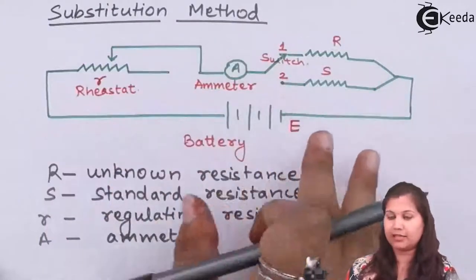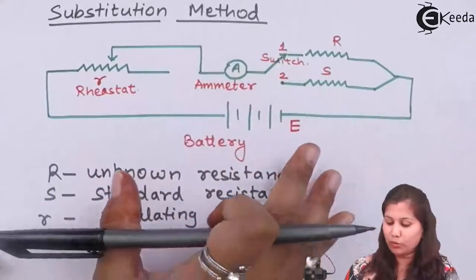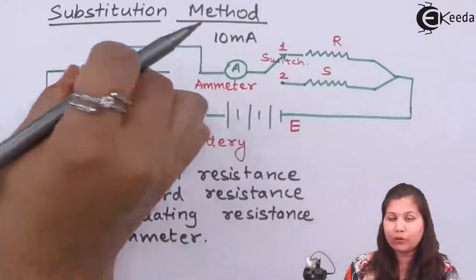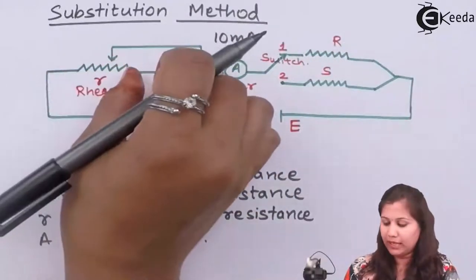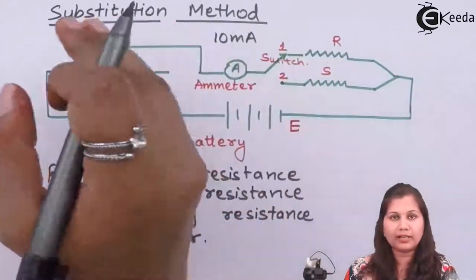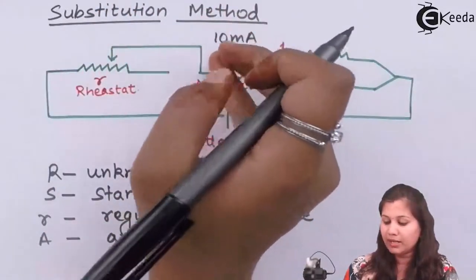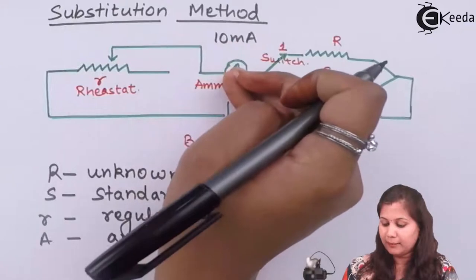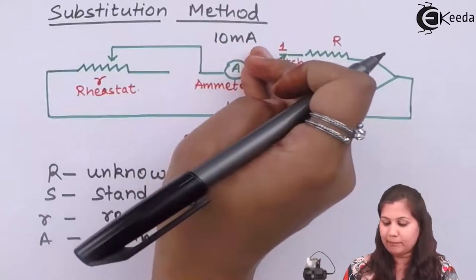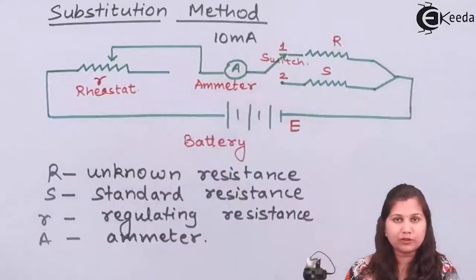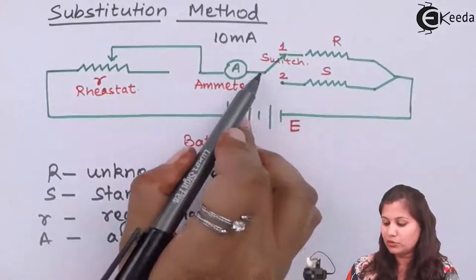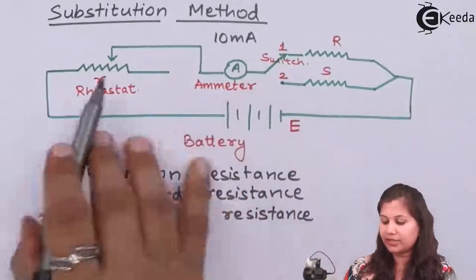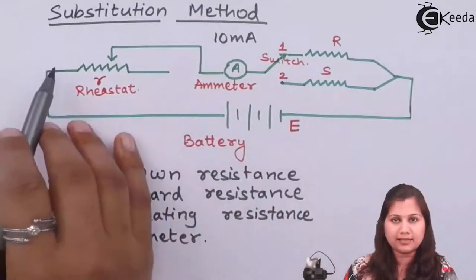Suppose the working current in this circuit is to be 10 milli amperes. We are going to vary the sliding contact such that the ammeter points towards 10 milli amperes of current. When this pointer is at 10 milli amperes, we are going to change the position of the switch. Now the switch will come to position number two, and then the standard resistance will be connected in the circuit.